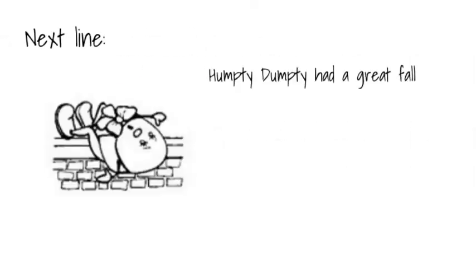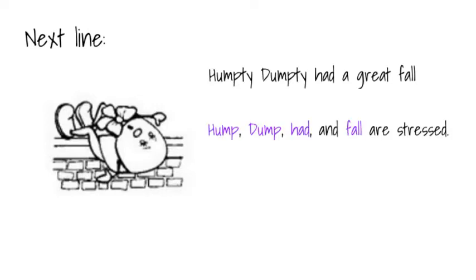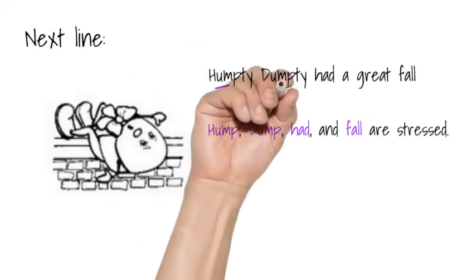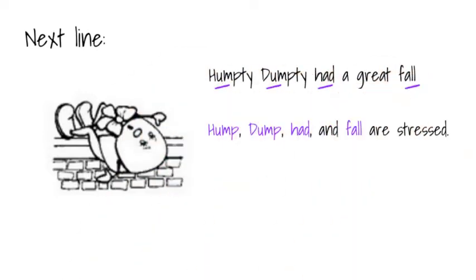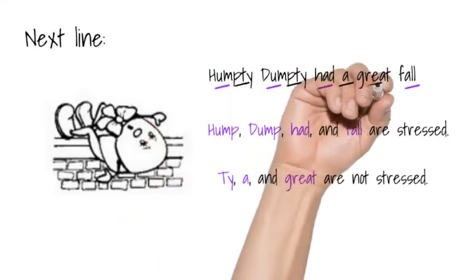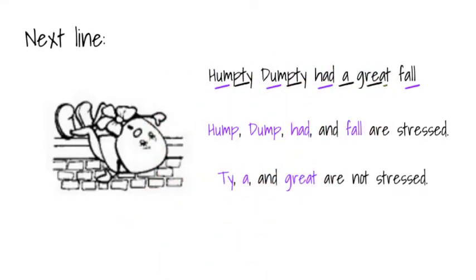Next line. Humpty Dumpty had a great fall. 'Hump,' 'dump,' 'had,' and 'fall' are stressed. Humpty Dumpty had a great fall. 'T,' 'a,' and 'great' are not stressed. They are very fast. Humpty Dumpty had a great fall.